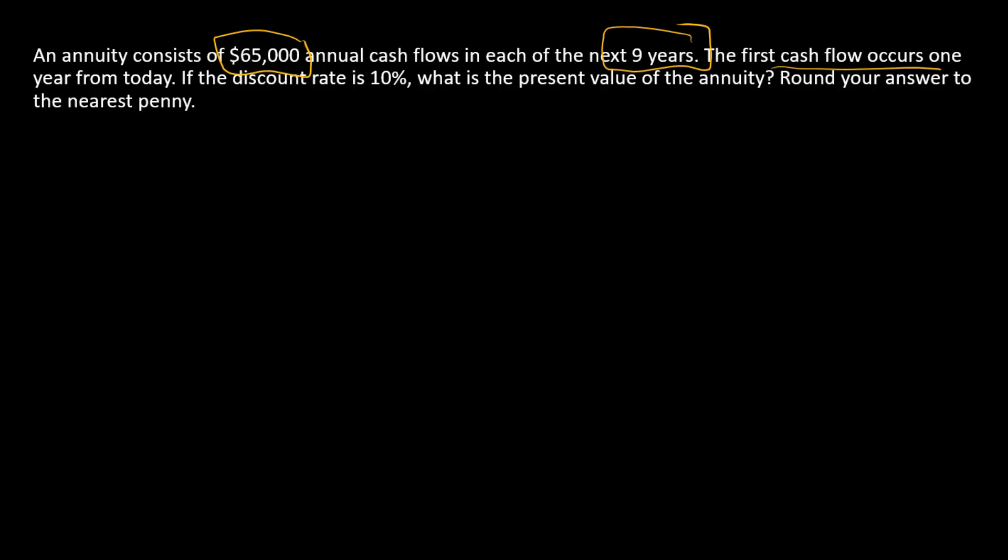So we can see the constant payment of $65,000, evenly spaced. It occurs nine times and the first payment occurs in year one.